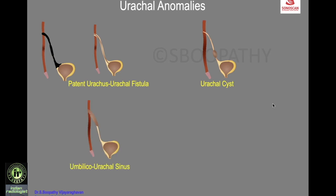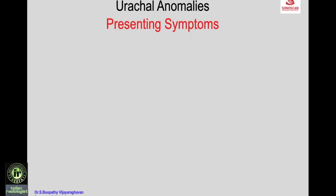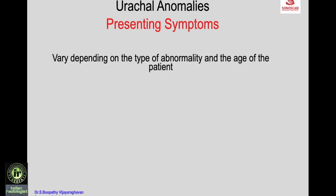The umbilico-uracal sinus is persistence of the urachal part closer to the umbilicus, while persistence closer to the bladder is called the vesico-uracal diverticulum. Additional complications include urachal abscess or infection, uracovesical calculus, and urachal carcinoma. Presenting symptoms vary depending on the type of abnormality and patient age, including umbilical discharge, hematuria, suprapubic pain or mass, urinary infection, or infra-umbilical induration.